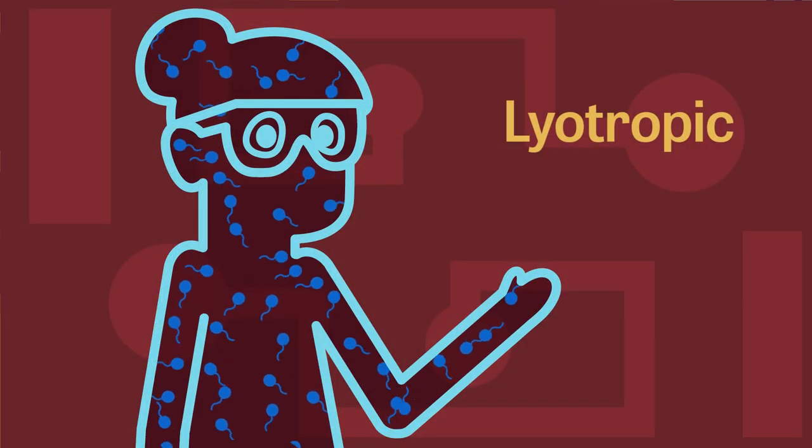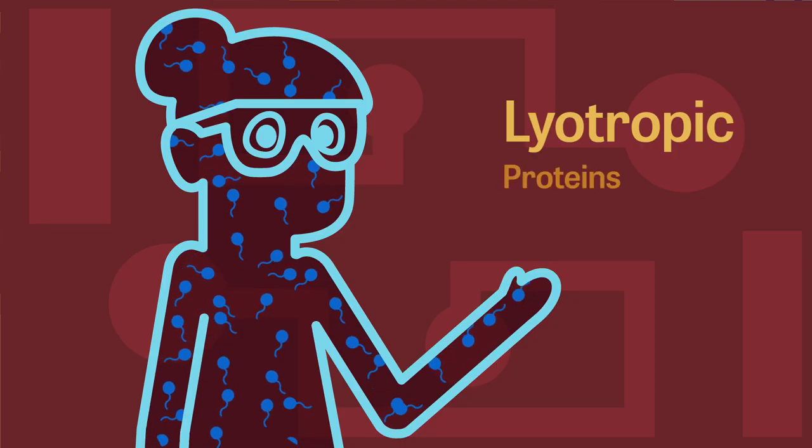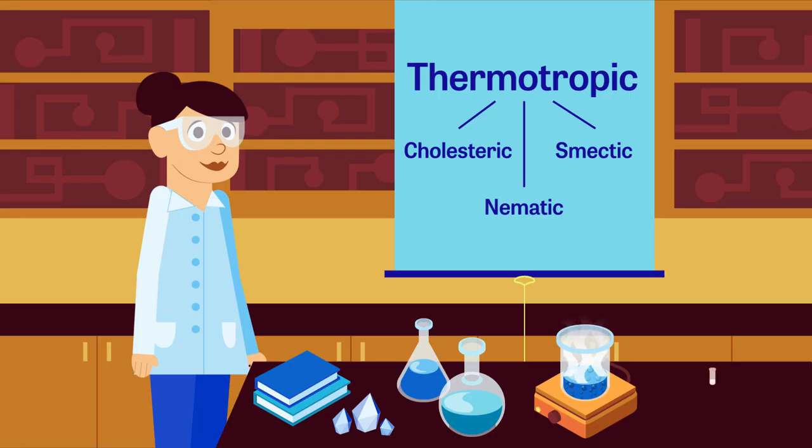Lyotropic liquid crystalline phases are found in living systems such as proteins and cell membranes. Thermotropic phases occur in a certain temperature range. The three most common types are cholesteric, smectic, and nematic.